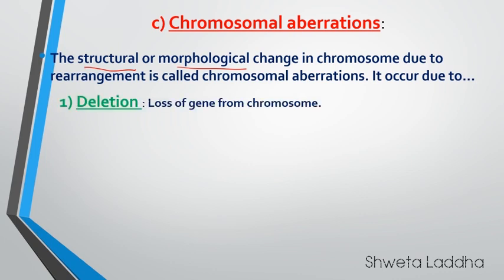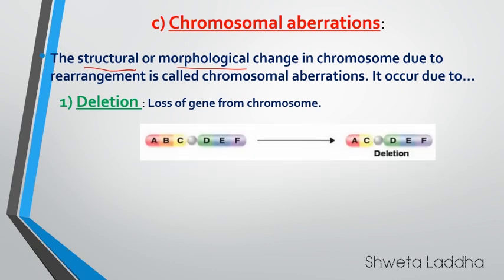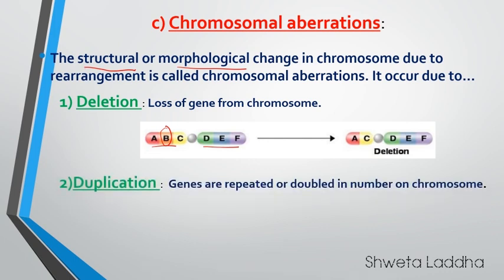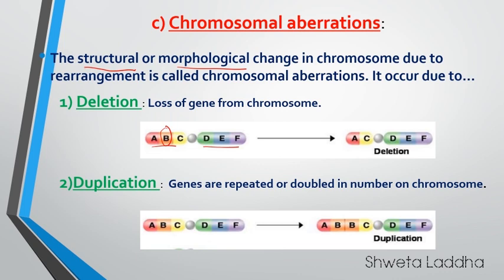Deletion — sometimes loss of a gene may occur from the chromosome. The gene sequence was A, B, C, D, E, F. Suddenly, B got deleted and the sequence changed to A, C, D, E, F. Thus, deletion of the gene causes a change in phenotype and leads to variation. Duplication — sometimes genes are doubled or duplicated. Here gene B is duplicated, it is doubled. This also leads to variation.